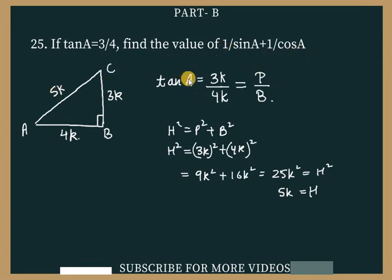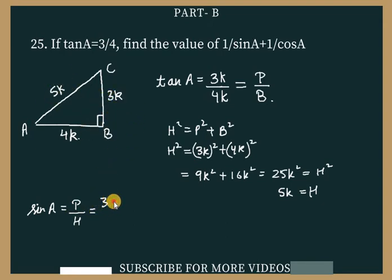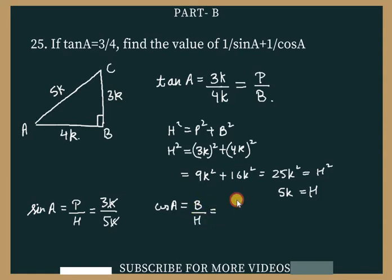Now we find sin A and cos A. sin A = P/H = 3K/5K = 3/5. cos A = B/H = 4K/5K = 4/5. The K values cancel out in both cases.